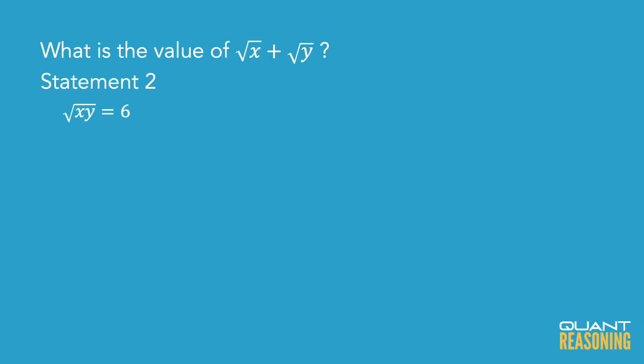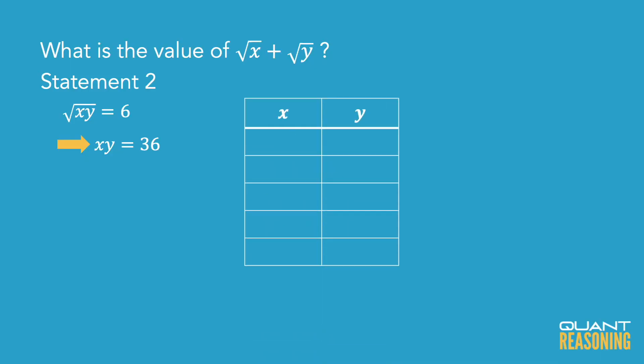Statement 2 gives us the root of the product x times y — apparently that's 6. That means the product of x and y is 36; I'm just squaring each side of that equation. Now we know that x and y are positive integers, but there are a lot of different factor pairs for 36. x and y could be 1 and 36, 2 and 18, 3 and 12, 4 and 9, or 6 and 6.